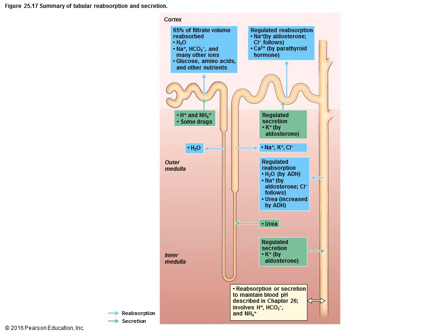At the same time, you have secretion occurring. Secretion is when substances that remained in the blood are going to be moving out of the blood into that tubule for the formation of urine — things such as hydrogen ions, ammonium, and certain drugs. As the filtrate moves down through the descending limb of the loop of Henle, you're going to have reabsorption of water occurring. It loops around, and on the ascending limb, you have things such as urea that are going to be secreted out of the blood into the urine. As you continue on up, you have additional reabsorption of ions such as sodium, potassium, and chloride.